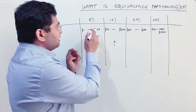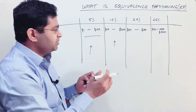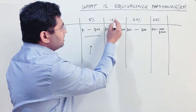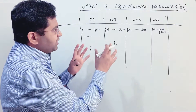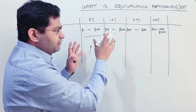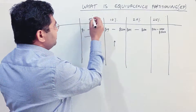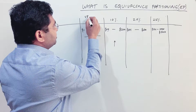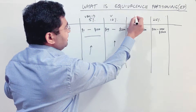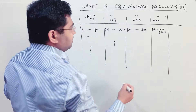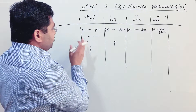For example, if items in cart total $100, I should get a 5% discount. If I complete a purchase of $101, I should get a 10% discount. So we have divided the module into different partitions, and these four discount tiers are considered the valid partitions.